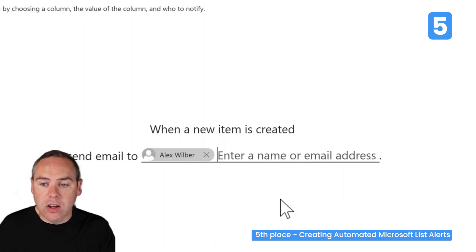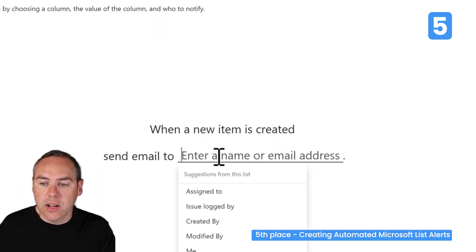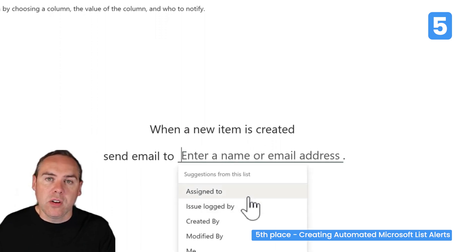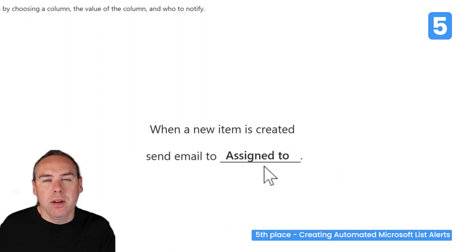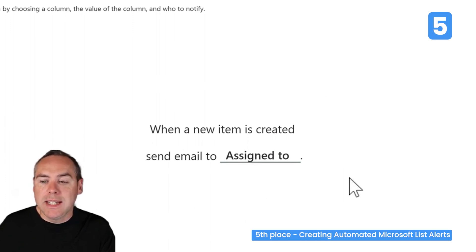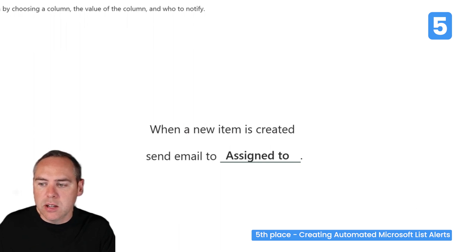Alternatively, I can clear that and set it to the person it's been assigned to in the list. So when someone creates that issue, there is a column called Assigned To, and once that person is defined, an email will be immediately sent to that person to advise them that an issue has been assigned to them.